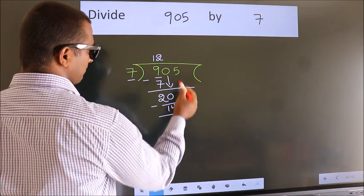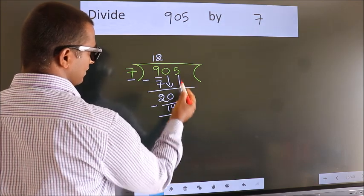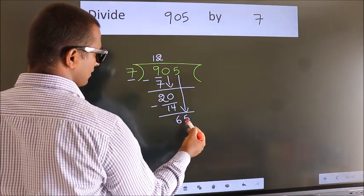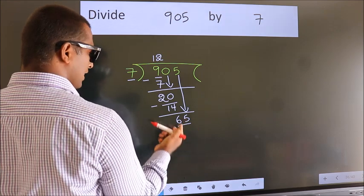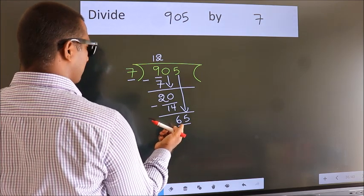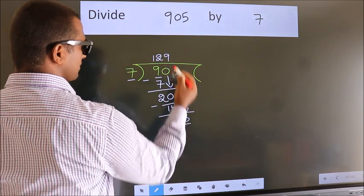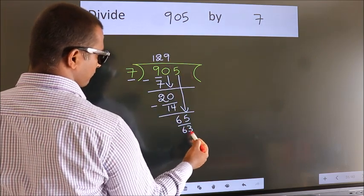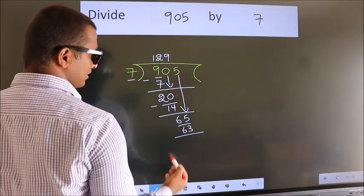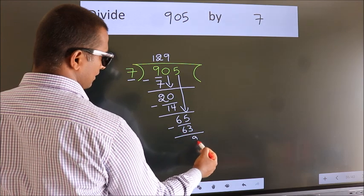After this, bring down the beside number. So, 5 down. So, 65. A number close to 65 in 7 table is 7, 9s, 63. Now, we subtract. We get 2.